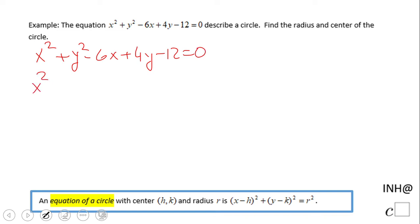First of all, we want to rearrange the terms: x squared minus 6x plus y squared plus 4y minus 12 equals 0. And then we're going to do something that is called complete the square.